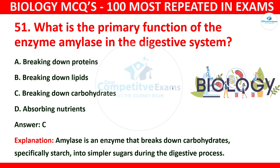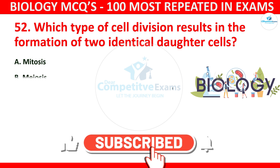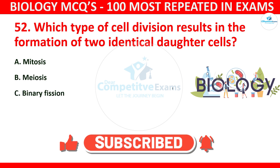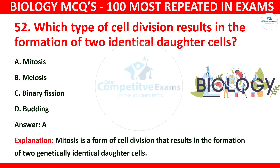Question number 52: Which type of cell division results in the formation of two identical daughter cells? The options are mitosis, meiosis, binary fission, or budding? The correct answer is A: mitosis. Mitosis is a form of cell division that results in the formation of two genetically identical daughter cells.